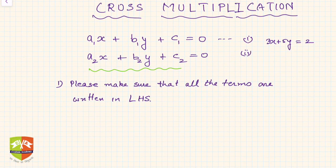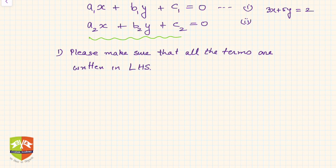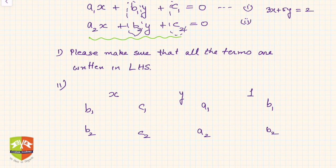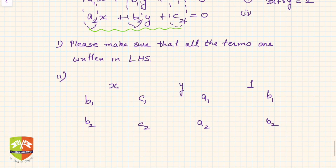Once this criterion is fulfilled, we can proceed. What you need to do is write x, y, and 1 like this, then write columns of numbers: b1, b2, then c1, c2, then a1, a2, and again b1, b2. Notice that when I write x, I start with the column next to x — that is b1, b2 — then c1, c2, then a1, a2, and finally b1, b2 again. Four such columns will be made.